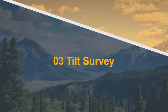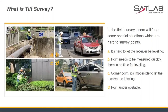That covers QuestDynamic Survey — you can give it a try after the webinar. Next part, we will talk about tilt survey. In field survey, users often face special situations where it is hard to survey points. There are four common cases: it's hard to keep the receiver level; points need to be measured quickly with no time for leveling; in a corner point it's impossible to keep the receiver level; and there is a point under an obstacle. That's why we need the tilt survey.